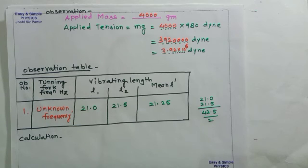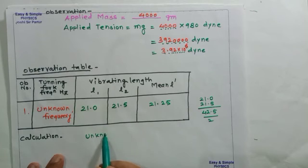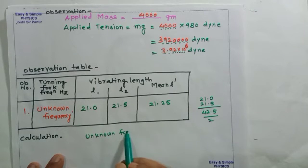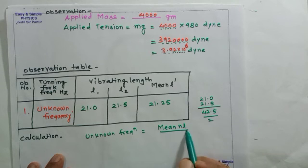Using this, we can calculate unknown frequency. So unknown frequency is equal to mean NL upon L dash.